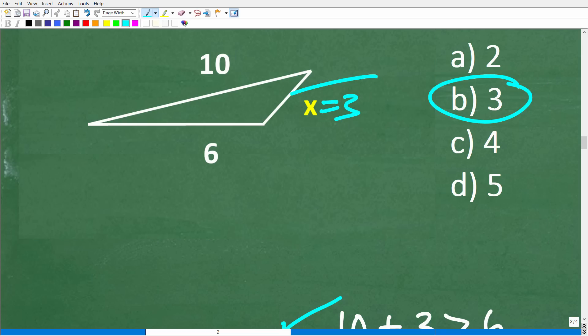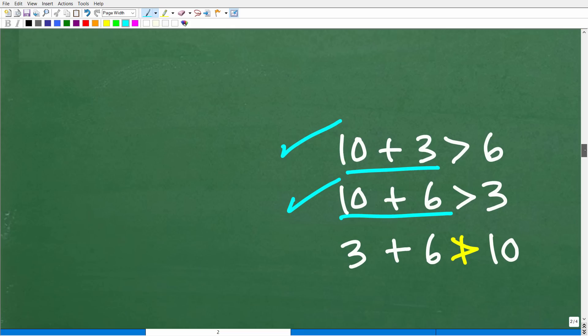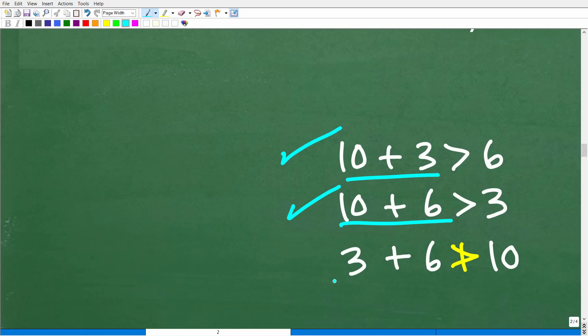But we have a problem here when we go this way. So if this is 3, 6 plus 3, is that greater than 10? Well, 6 plus 3 is not greater than 10, right? So 9 is not greater than 10. So this fails the triangle inequality.